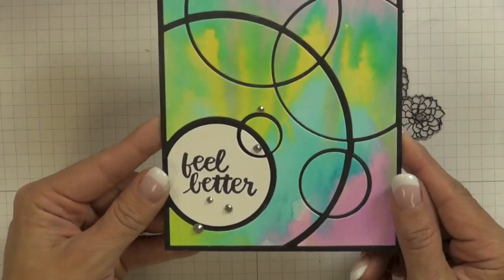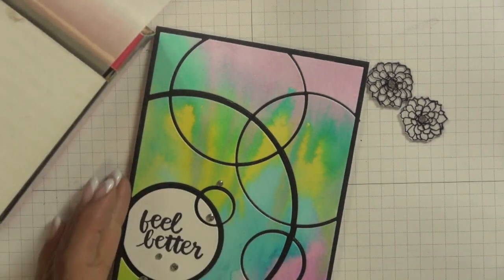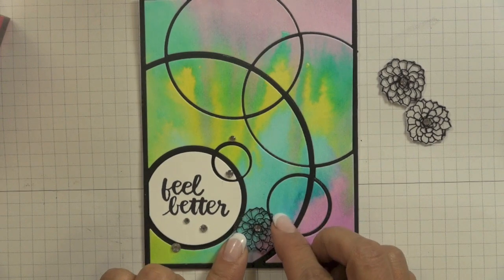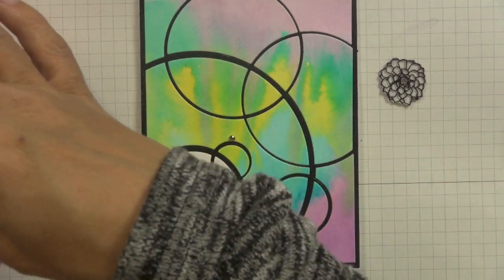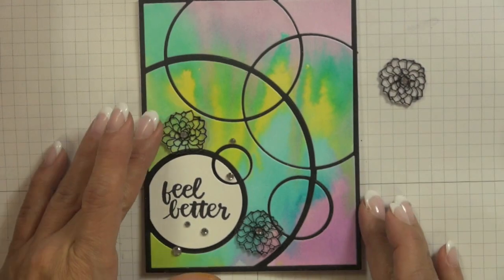Now ultimately I only ended up using three of the flowers that I stamped so I cut them all out, I shrunk them and then once they were cool I applied a small rhinestone to the center of each flower and then stuck the flowers to my card using a small mini glue dot placed at the back of the flowers and hidden behind the rhinestones.